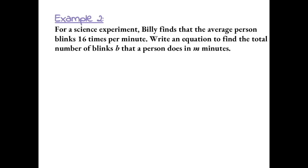Example 2: For a science experiment, Billy finds that the average person blinks 16 times per minute. Write an equation to find the total number of blinks, which represents the variable b, that a person does in m minutes. So a person blinks 16 times per minute. The number of times they blink is equal to 16 times the number of minutes that they're blinking for.